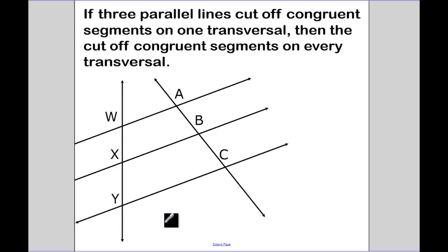This is another theorem. This theorem we use a little bit more often than the last one. So three parallel lines. So WA is parallel to XB, which is also parallel to YC. And it cut off congruent segments, so I don't need my then piece yet. So I cut off congruent segments. That means that WX is equal to XY.